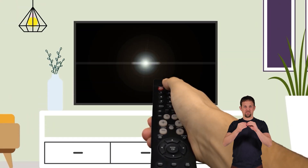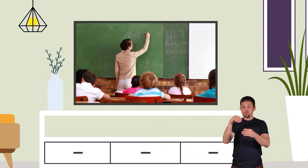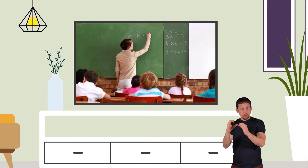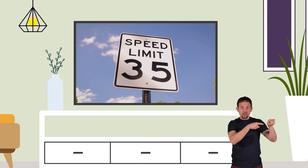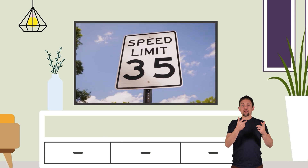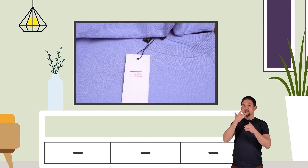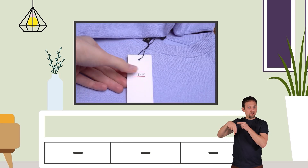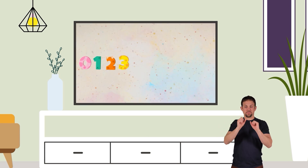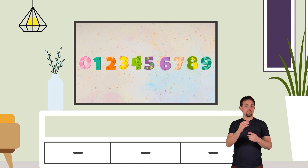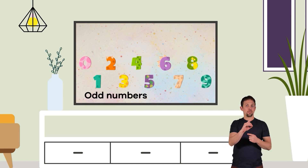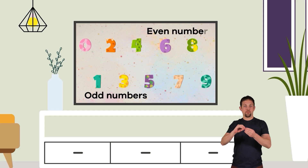Numbers are everywhere, whether it is in your math class, on the speed limit sign on the side of the road, or on price tags at your favorite store. All numbers can be separated or classified into two groups: odd numbers or even numbers.